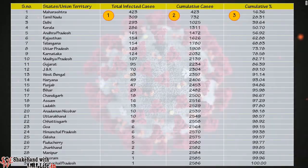The first column has the infected number of cases in descending order with the respective state or union territory. The second column has the cumulative number of infected cases, and the third column has the cumulative percentage of the infected cases. Now if we display this data on the Pareto chart,